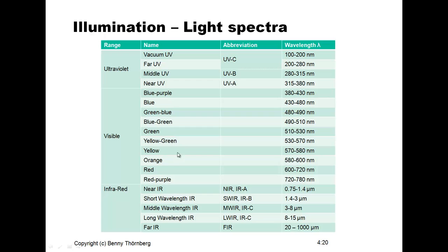Visible light can be further divided into its colors like blue, green, yellow, orange, red, and so on. The longer wavelengths not visible for humans are called infrared light, which can be further divided into subclasses: near infrared, short wavelength infrared, middle wavelength infrared, and long wavelength infrared. This long wavelength infrared in the range of 8 to 15 micrometers is used for thermal cameras that can detect heat from human bodies, animals, or analyze heat dissipation and heat losses from buildings.